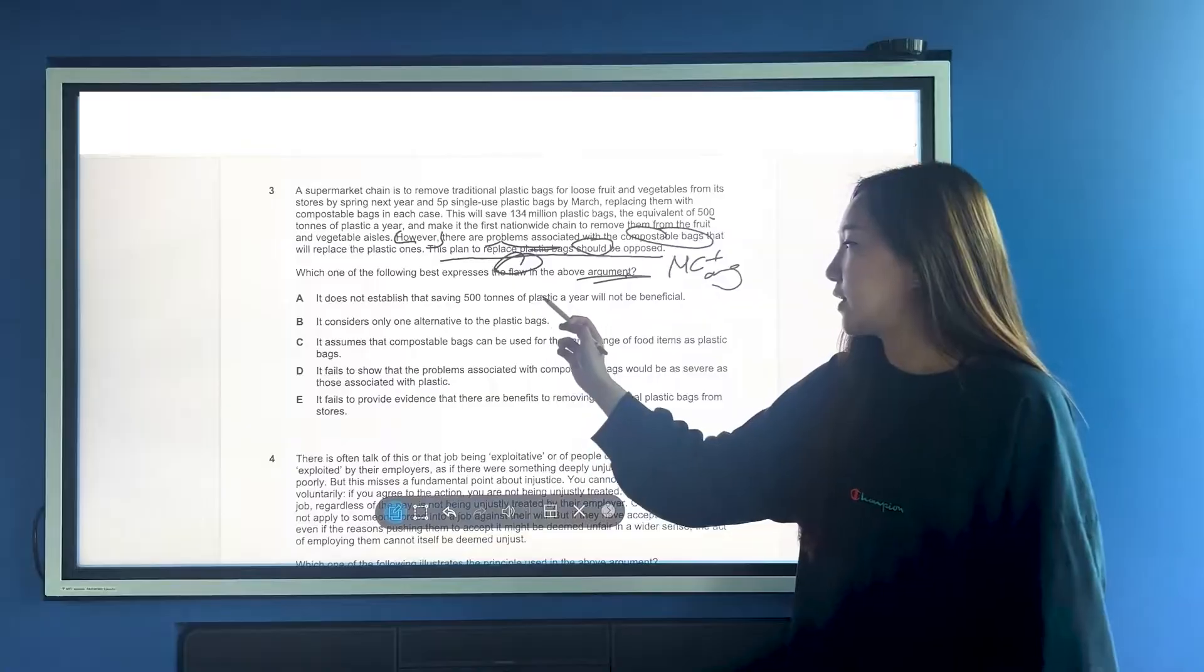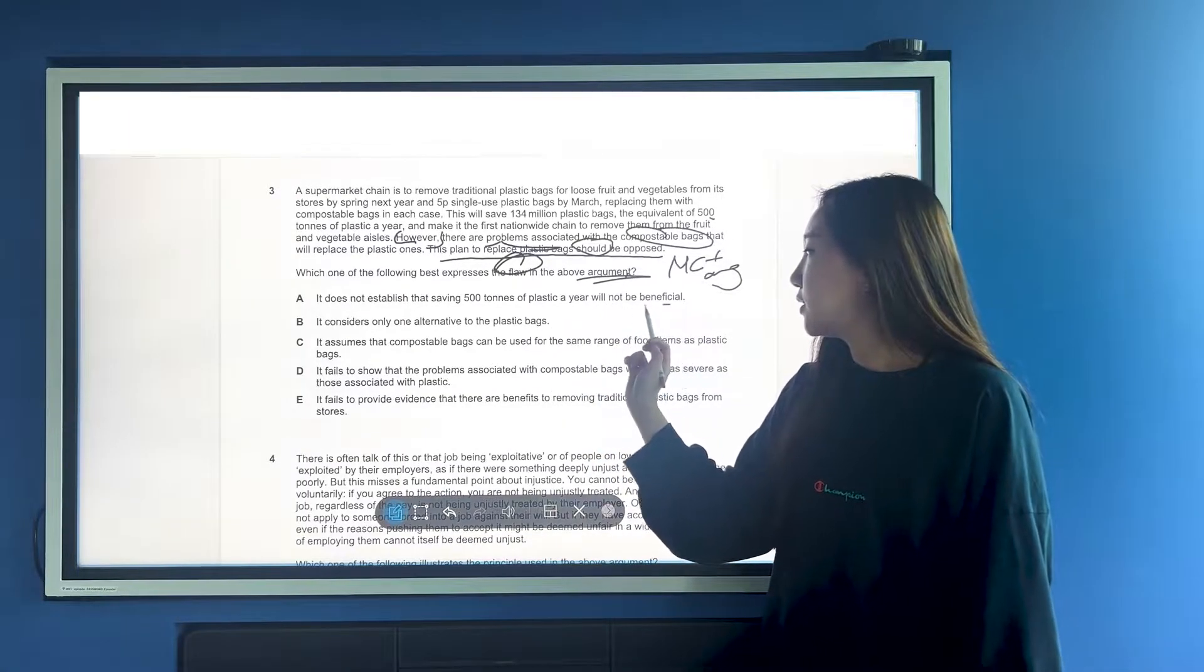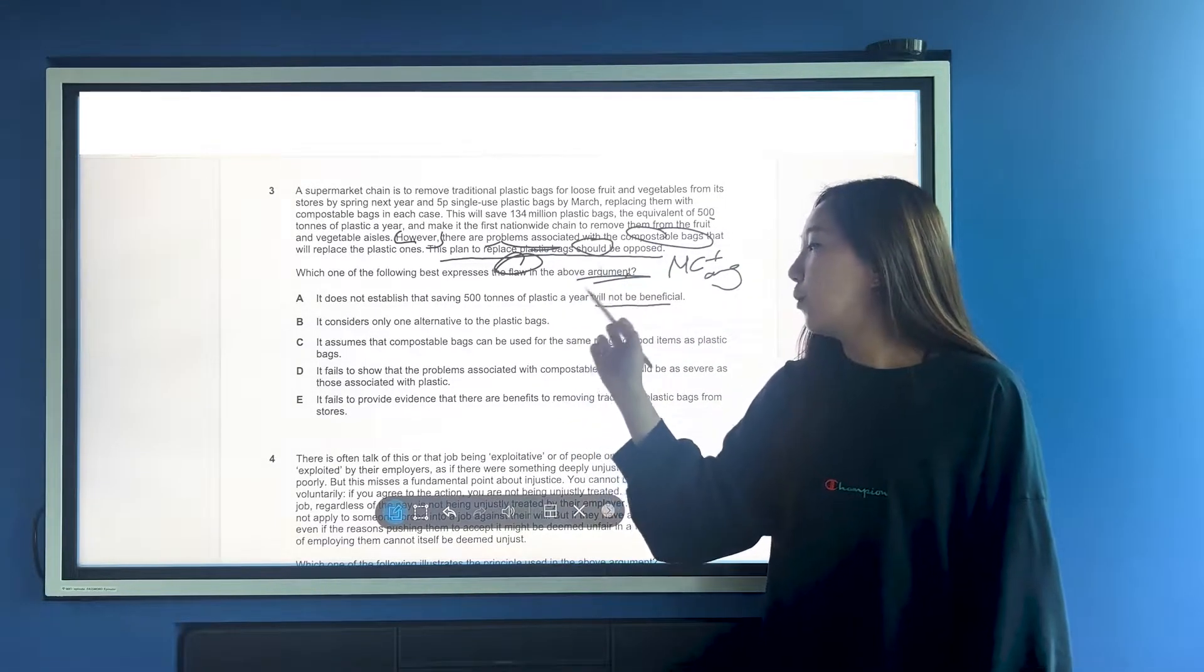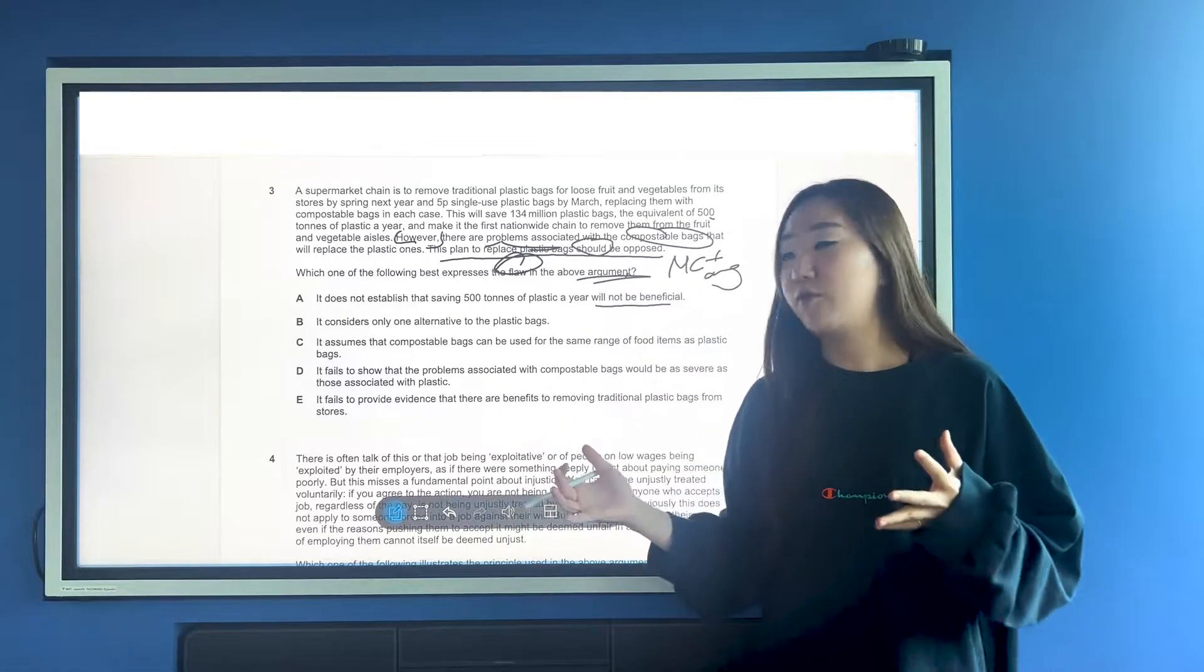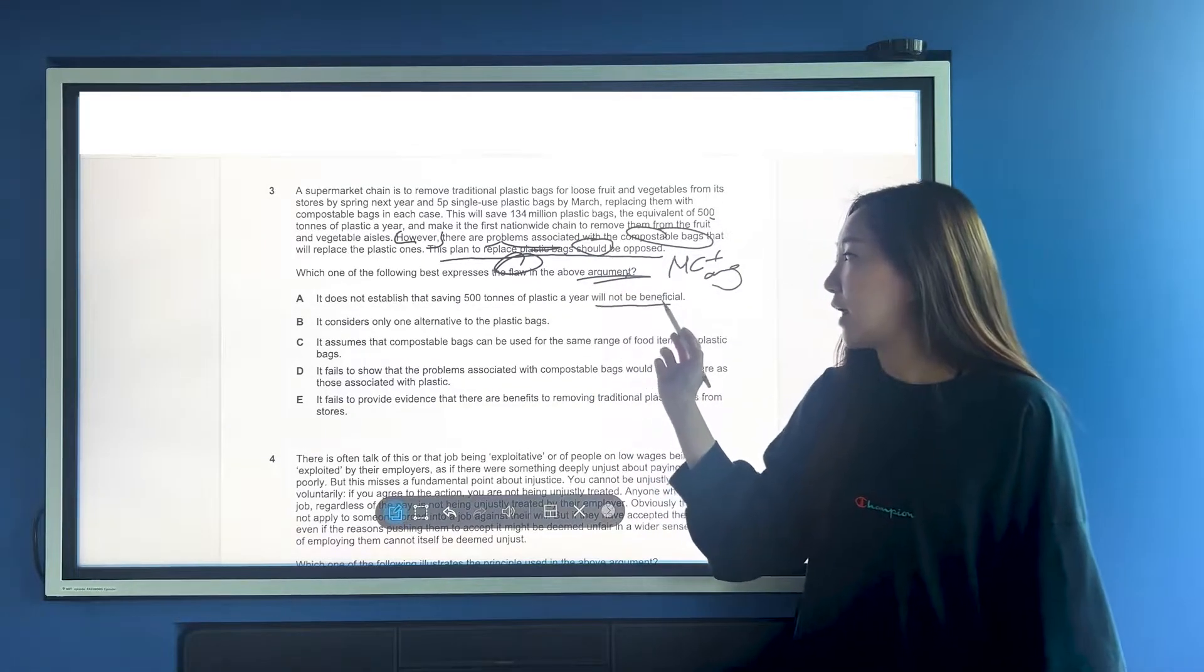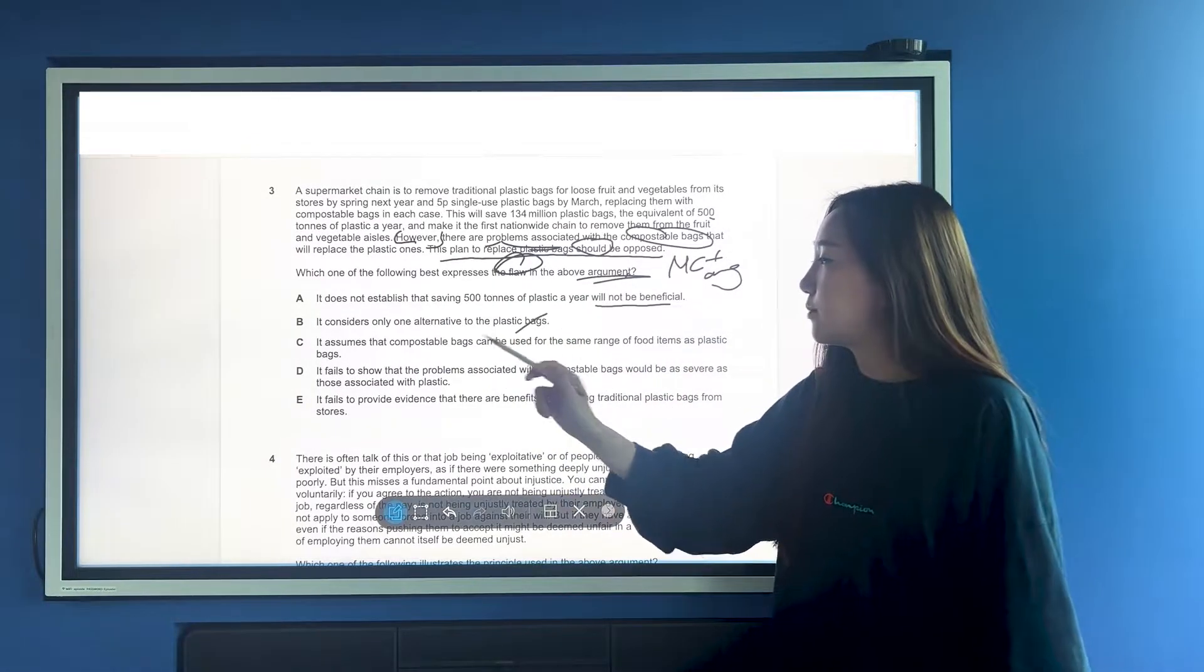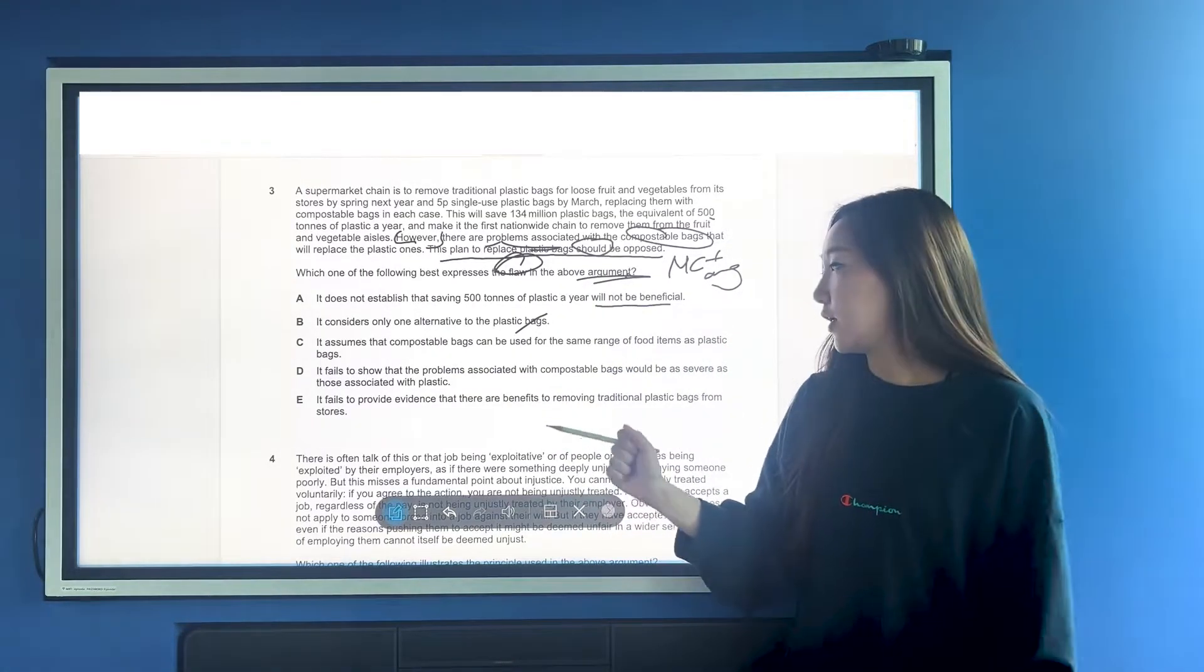So A, it does not establish that saving 500 times the plastic a year will not be beneficial. That's not really the point, because we want them to more balance plastic bags and compostable, and overall, which one is going to give the net benefit. Of course, they have mentioned this, but this isn't arguing the other side, this is still on the topic for compostable bags. B, consider there's only one alternative, the plastic bags - that doesn't really matter.